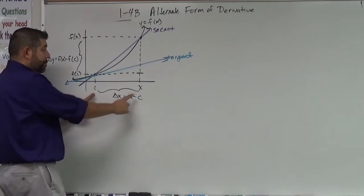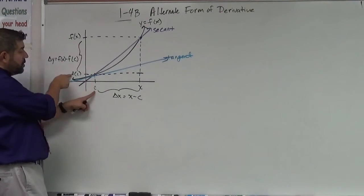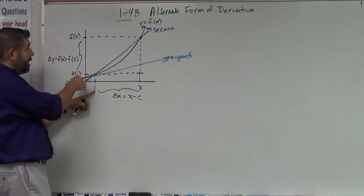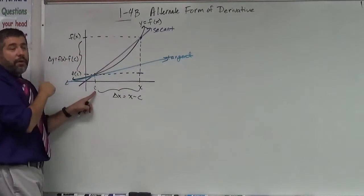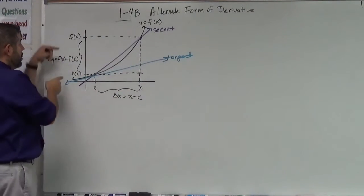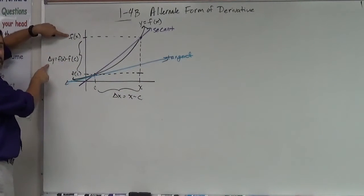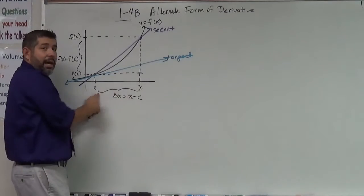This time I have c and x. So at some point c I have a corresponding y value f of c on that function and a corresponding y value for x on that function of f of x. The difference for y now, the change in y is going to be f of x minus f of c. It's still that difference. The change in x here is going to be x minus c.